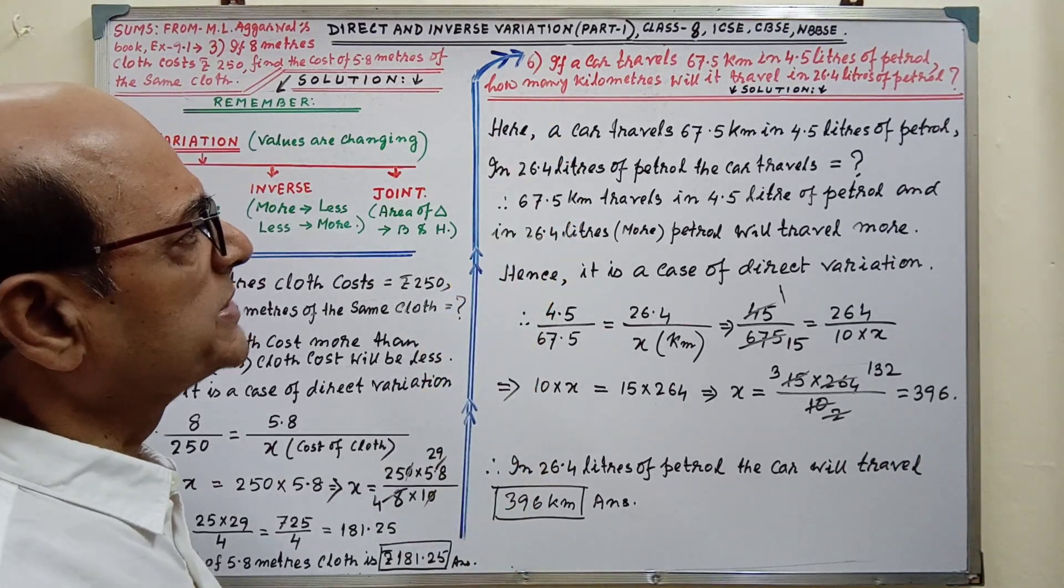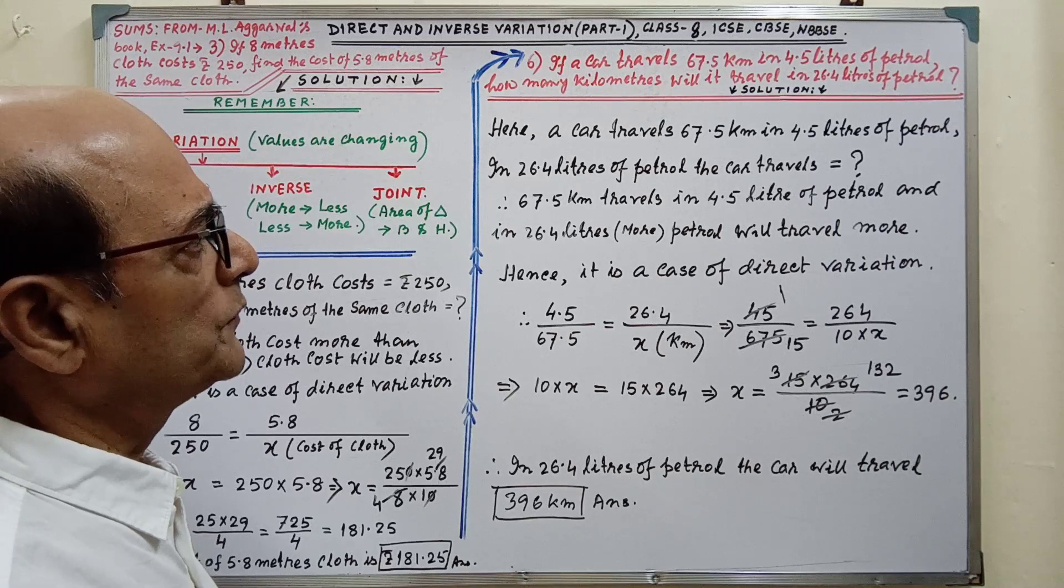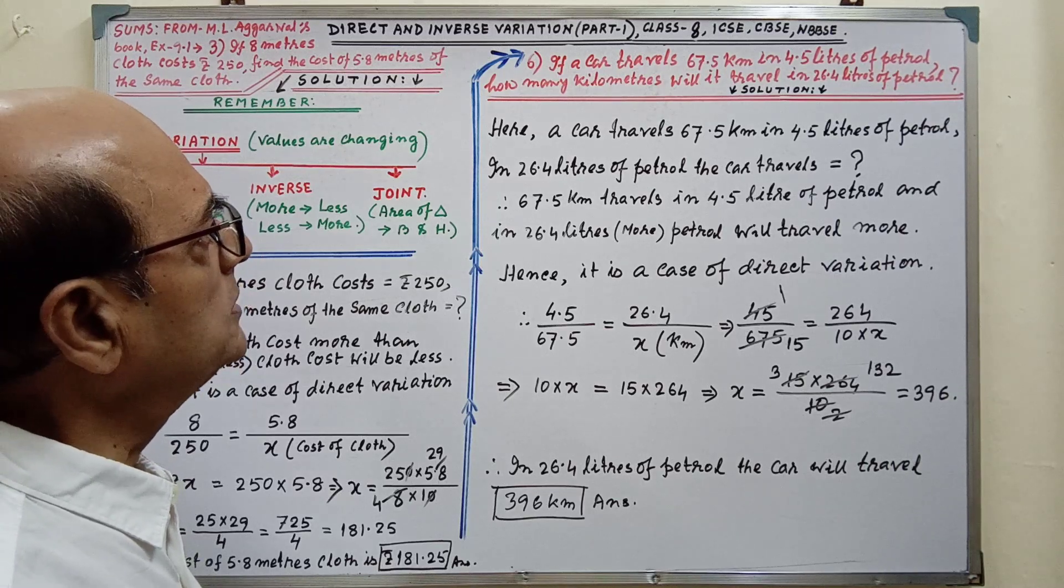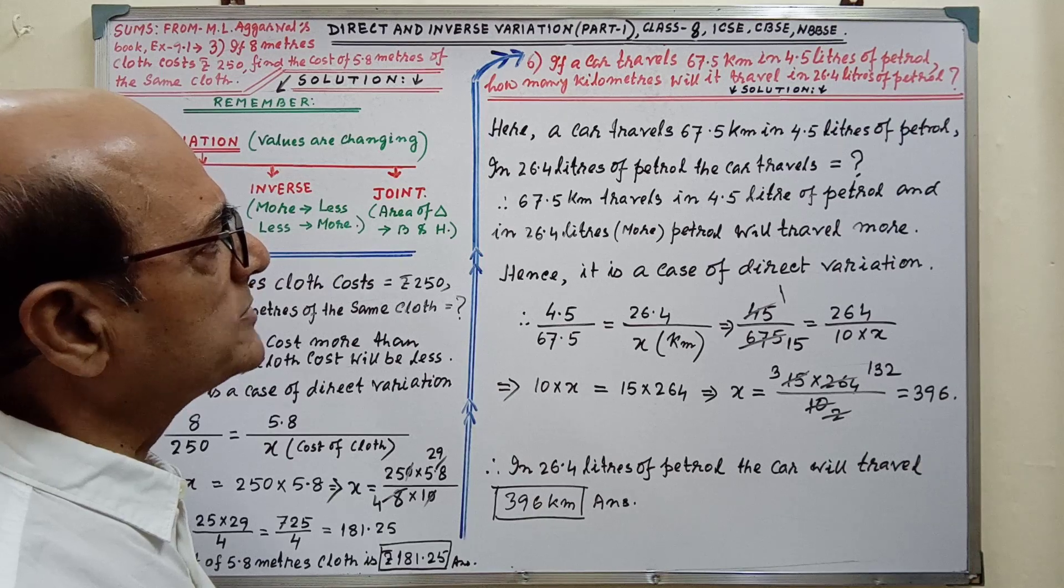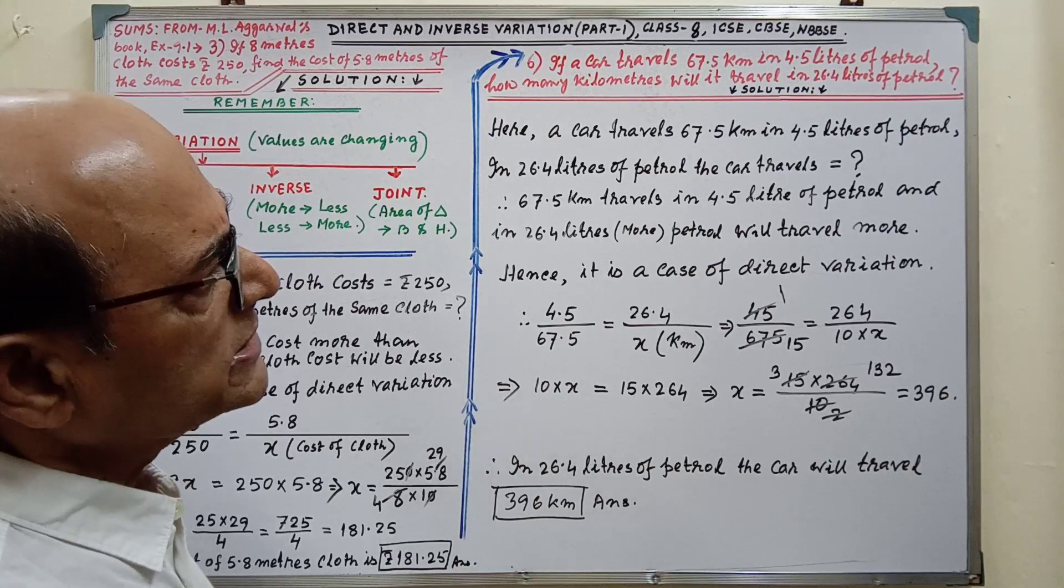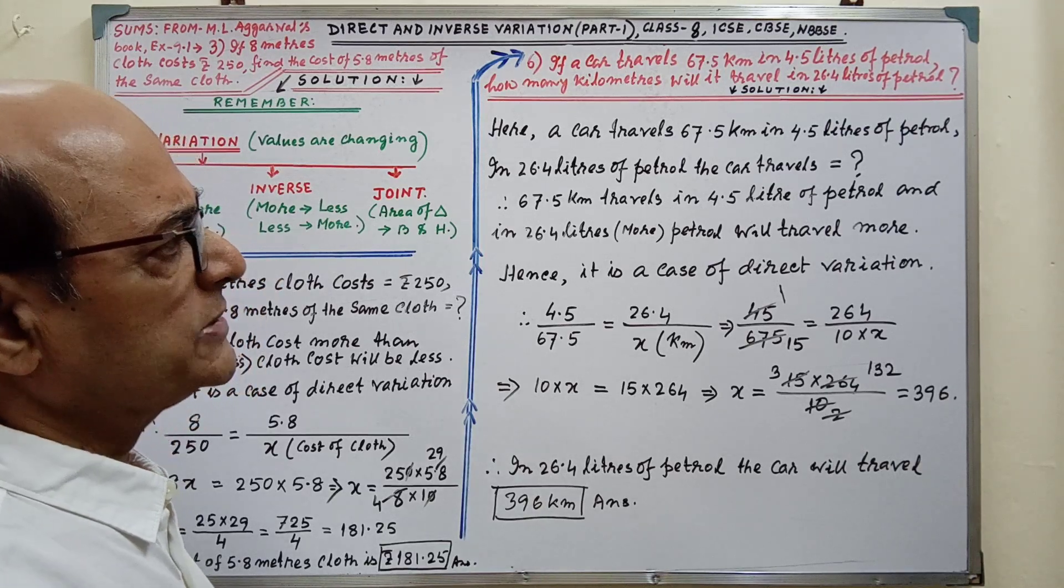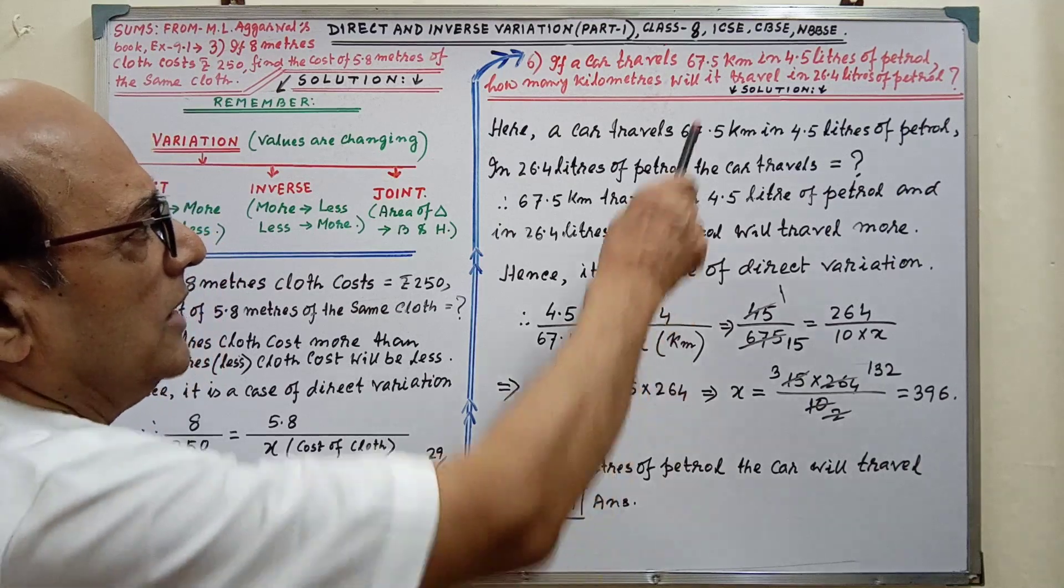Next sum, if a car travels 67.5 kilometers in 4.5 liters of petrol, how many kilometers will it travel in 26.4 liters of petrol? Now, solution.